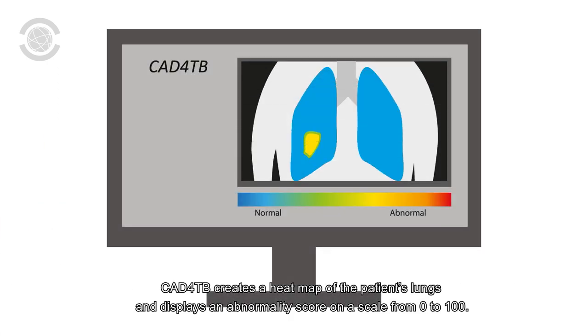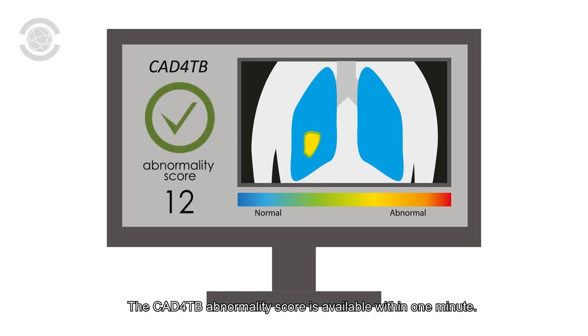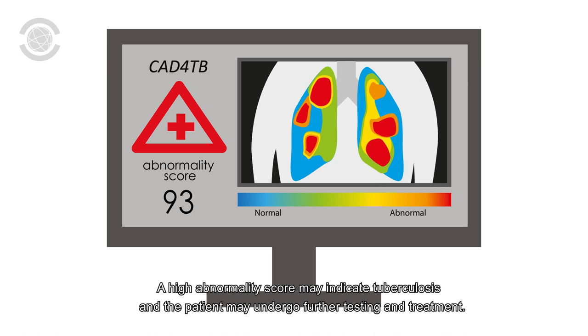CAD4TB creates a heat map of the patient's lungs and displays an abnormality score on a scale from 0 to 100. The CAD4TB abnormality score is available within one minute. A high abnormality score may indicate tuberculosis and the patient may undergo further testing and treatment.